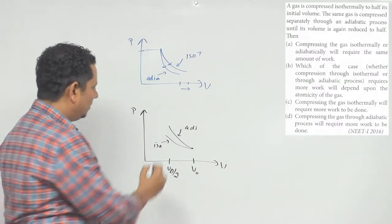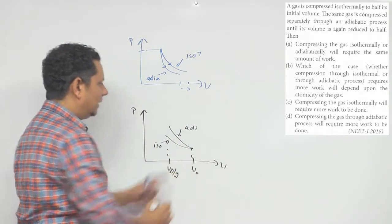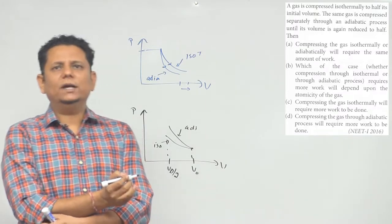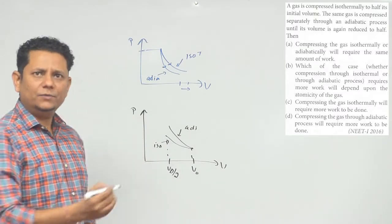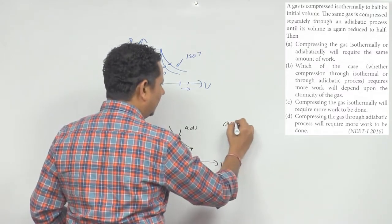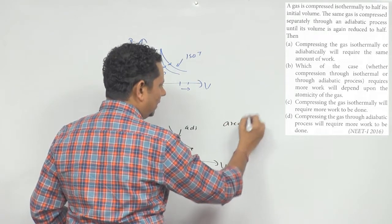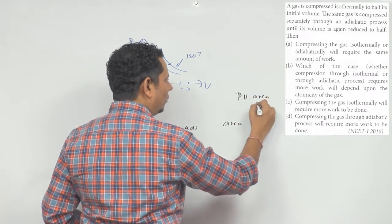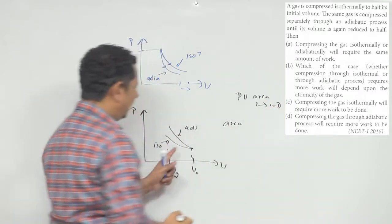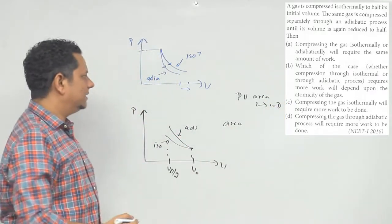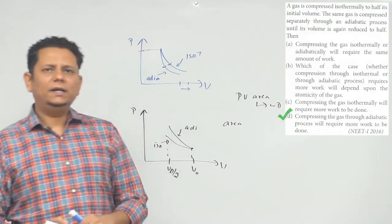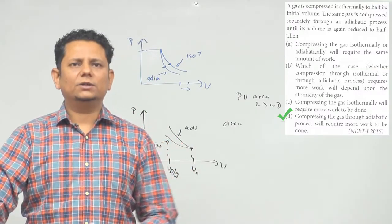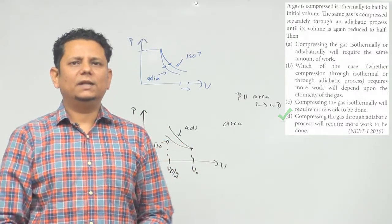इस case में area under adiabatic graph ज़्यादा होएगा. हमें पता है कि PV graph का area work done देता है — तो उस case में adiabatic का area ज़्यादा है. इसलिए option D सही है: compressing the gas through adiabatic process will require more work to be done.